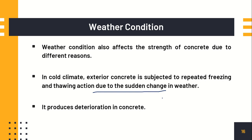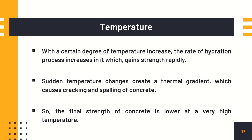The ninth factor is temperature. With a certain degree of temperature increase, the rate of hydration also increases, giving good strength. However, a sudden temperature change means the concrete is subjected to a thermal gradient, which causes cracking and spalling. Spalling means the bond between the concrete and the surface or reinforcement breaks and the concrete folds up. The final strength of concrete is always lower at high temperatures.